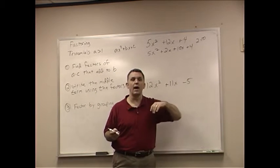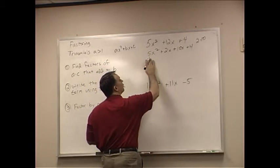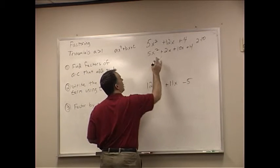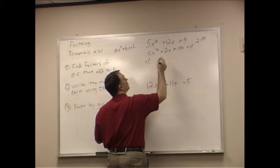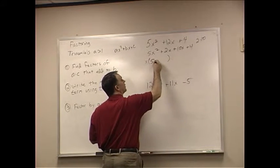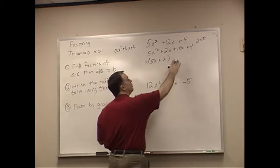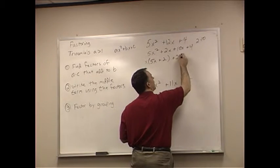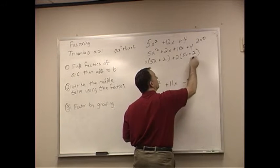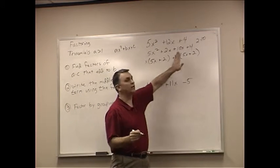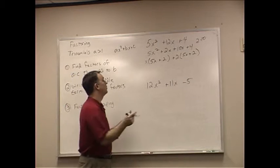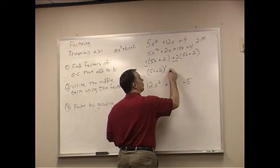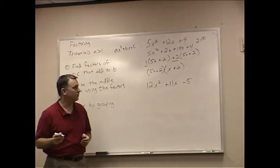I've got four terms here, don't I? I can group them. So what do 5X to the second and 2X have in common? Remember, we do them by pairs. They both have an X in common. And when I divide both of those by X, I get 5X plus 2. And then what do 10X and 4 have in common? They have a 2 in common. When I divide the 2 out of both of those, I get 5X plus 2 as well. Both of these have a 5X plus 2. That's what happens when you factor by grouping. So we're going to write 5X plus 2 times, and we write the leftovers that are on the outside and the other parentheses, X plus 2.